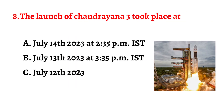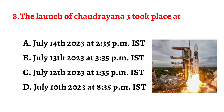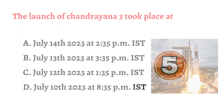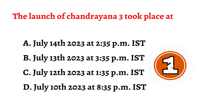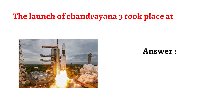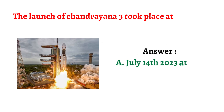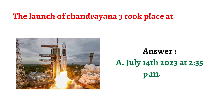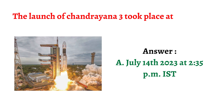Question number eight: The launch of Chandrayaan 3 took place at? The correct answer is option A: July 14, 2023 at 2:35 PM Indian Standard Time.